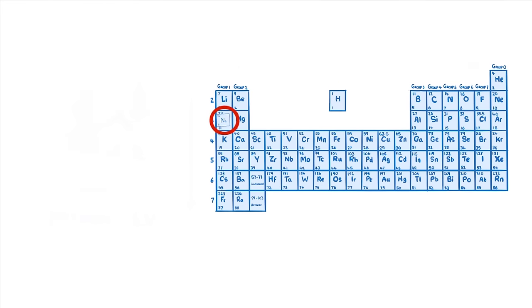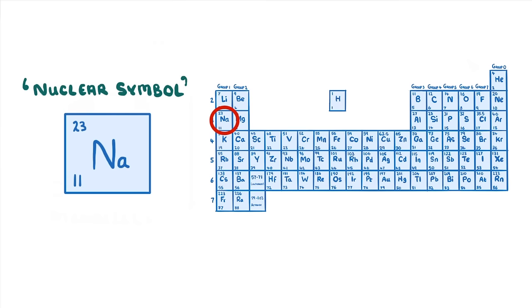Within each of these boxes is the nucleus symbol for that element, which has three components. On the right we have the elemental symbol, which is the one or two letter symbol for that element, in this case Na, which stands for sodium.